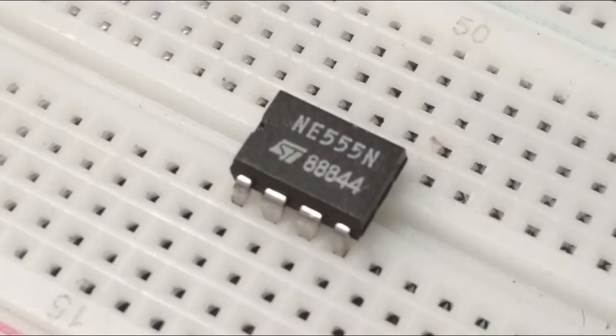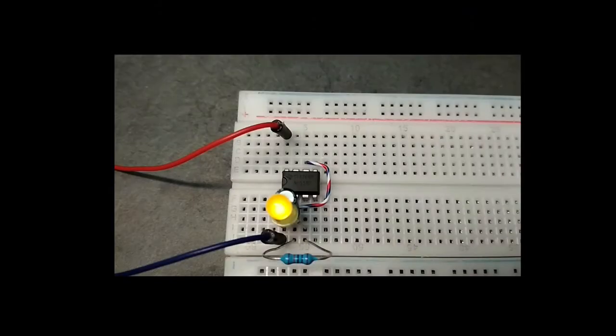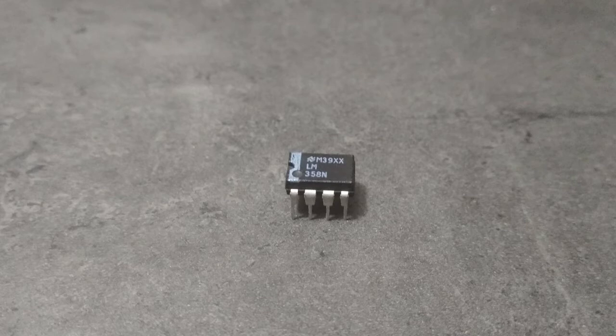The 555 timer is quite popular and can be used to generate a square wave among other things. I made a video about that a while ago and you can go check it out if you're interested. But what if you don't have one laying around? Or maybe you have a spare op amp in your circuit but you would rather not add another IC.